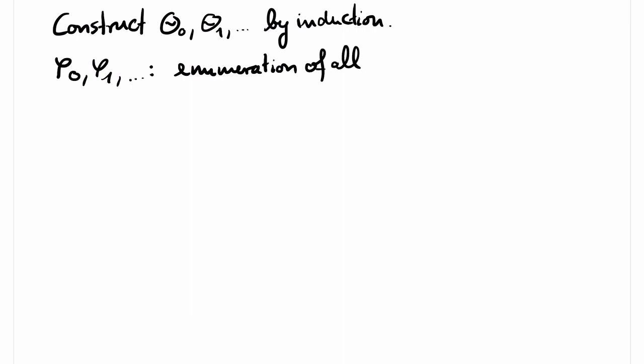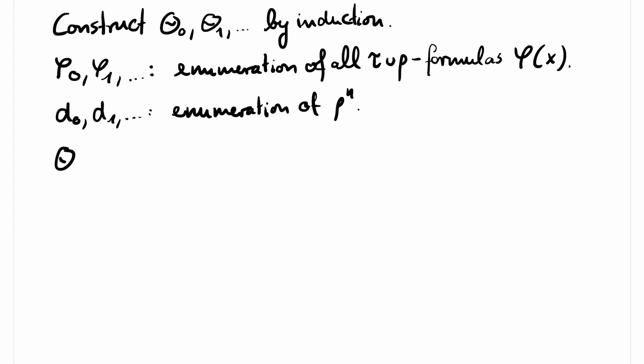We construct the new sentences theta 0, theta 1, and so on, by induction. First, fix an enumeration phi 0, phi 1, and so on, of all tau union rho formulas phi of x. Let d0, d1, and so on, be an enumeration of rho to the n. Theta 0 is defined to be the tautological sentence exists x, x equals x.